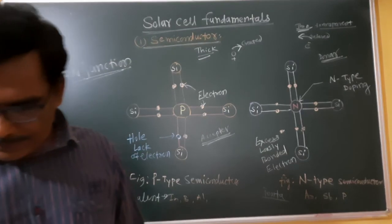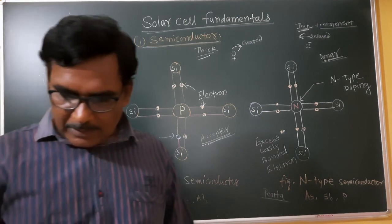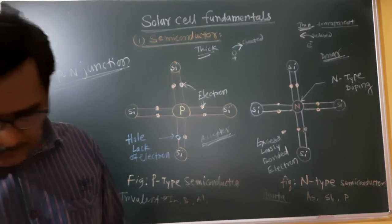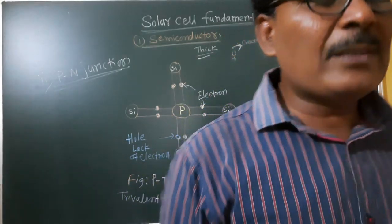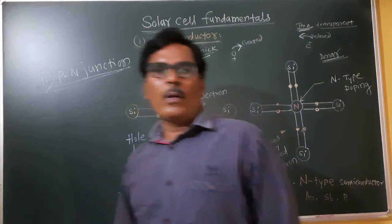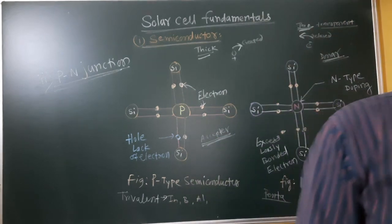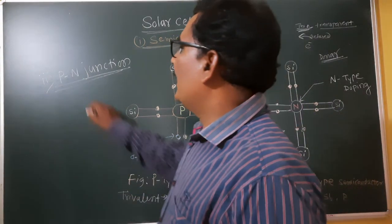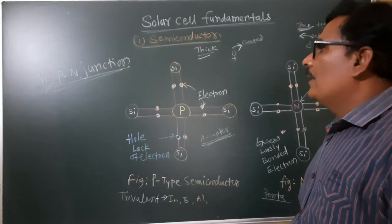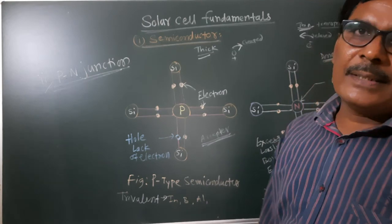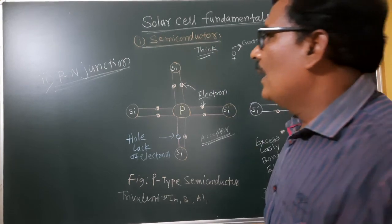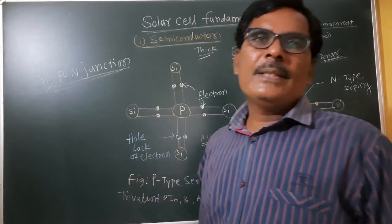In a homojunction silicon cell, P-type material is doped with acceptor impurities and a thin layer of N-type material is doped with donor impurities. The junction carries charge and moves electrons from N-type to P-type. In the solar cell, the P and N junction is very important — N-type is thin and P-type is thick.